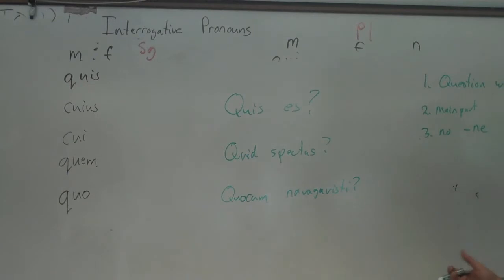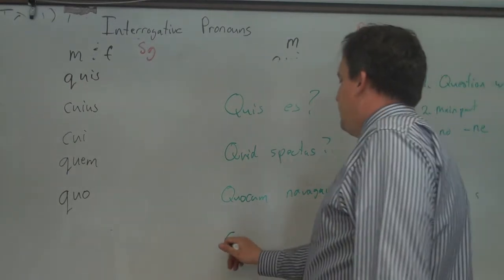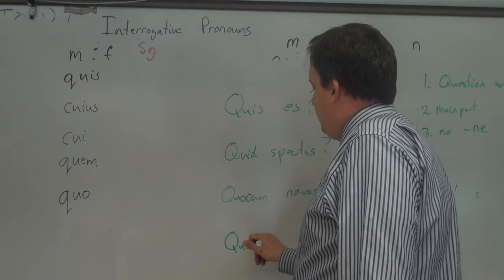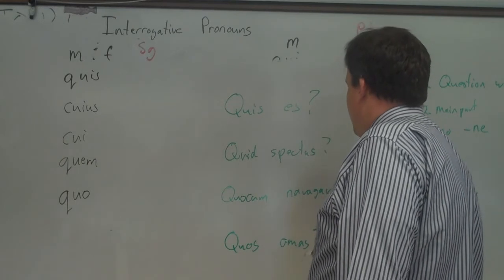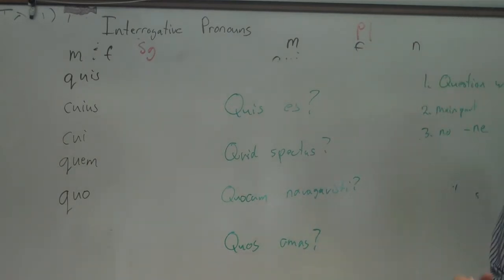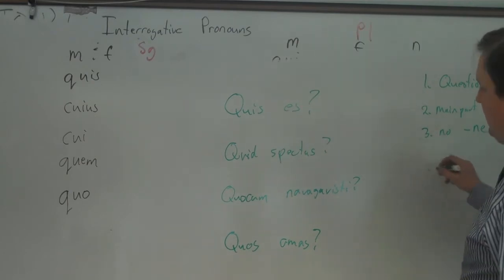You don't need -ne to ask a question with quis or quid, both in singular and plural. And you say, well, how does it work in the plural? So, you can say like this. If it's a group of people, quos amas. Whom do you like? Like, is there a group of people you like? Alright.